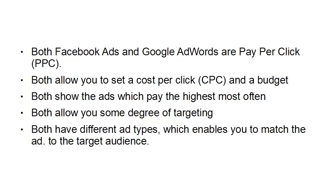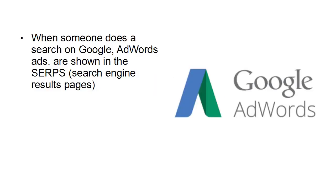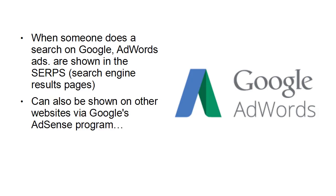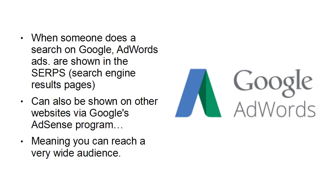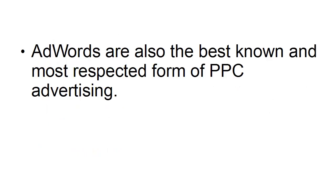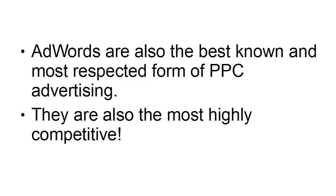But that's about where the similarity ends. Let's take a look at some of the key differences between advertising on Google AdWords and advertising on Facebook Ads. When someone does a search on Google, AdWords ads are shown in the SERPs — the search engine results pages — generally down the right-hand column and sometimes across the top of the results, usually marked as ads or sponsored results. You can also show an ad on somebody else's website via Google's AdSense program, meaning you can reach a very wide audience with Google AdWords. AdWords are the best-known and most respected form of pay-per-click advertising, but they're also the most highly competitive.